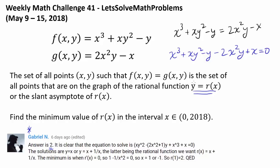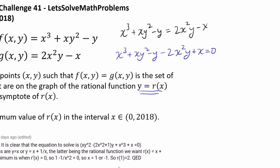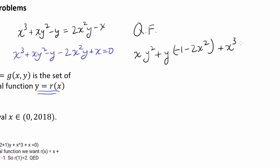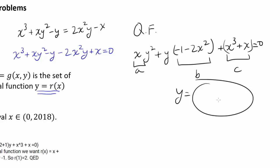Now, how do we proceed? How do we find y? There are many ways of going about this. Perhaps the most obvious way is to use the quadratic formula, because we have this polynomial quadratic with respect to y. You can set it up as xy squared plus y times (negative 1 minus 2x squared) plus (x cubed plus x) equals 0, treating x as a, negative 1 minus 2x squared as b, and x cubed plus x as c, and solve the resulting quadratic for y.